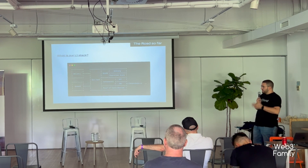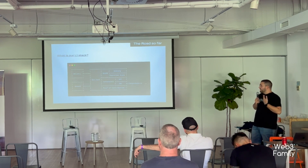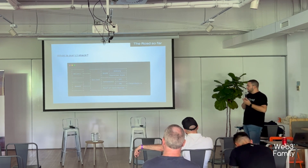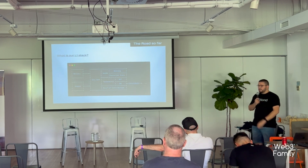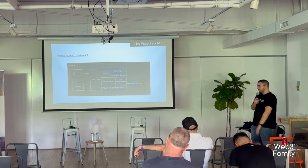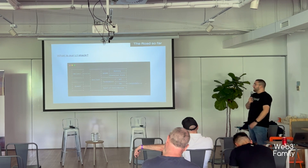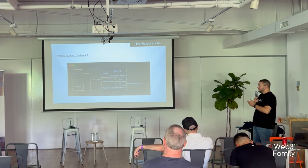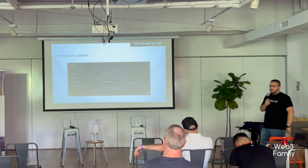We have an execution engine called GNOVM which executes the GNO language. We have a consensus mechanism called Tendermint 2, using a consensus protocol called proof of contribution. And of course we have external world APIs that interact with wallets and any kind of different client applications.